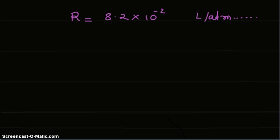The value of the gas constant R is 8.2 × 10^-2 in liters·atmosphere. The temperature is also given at 1150 K.